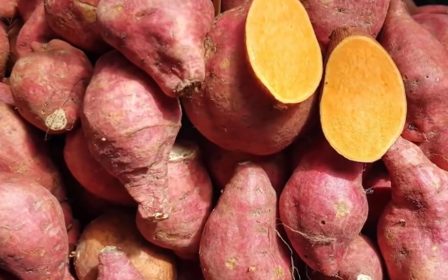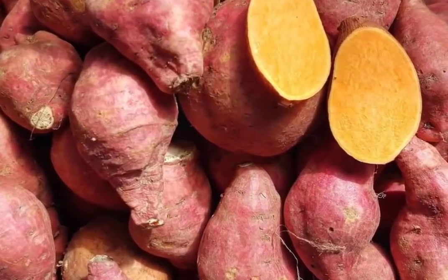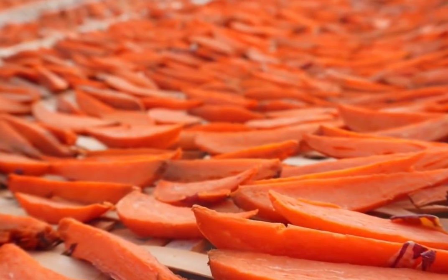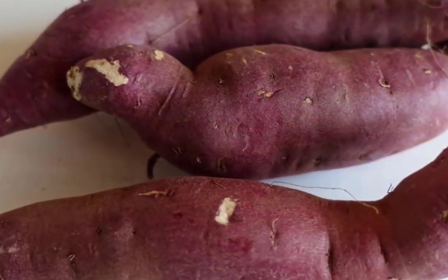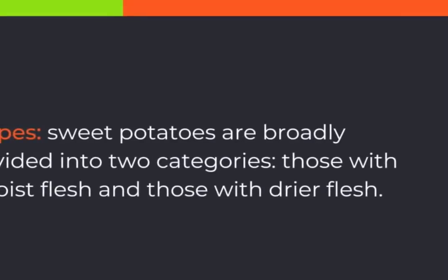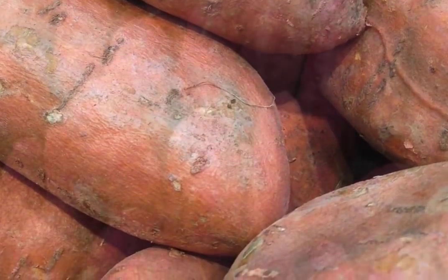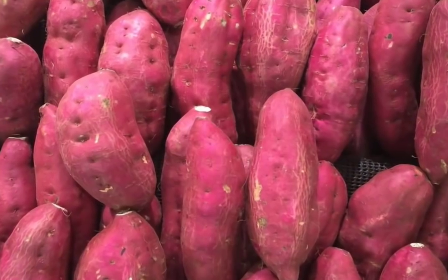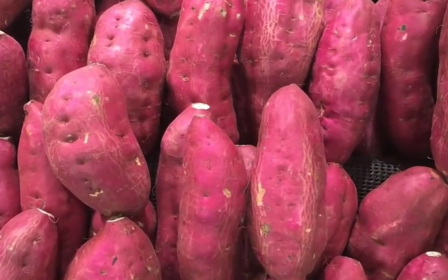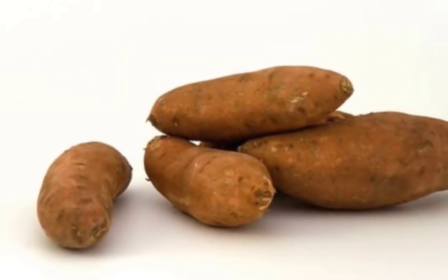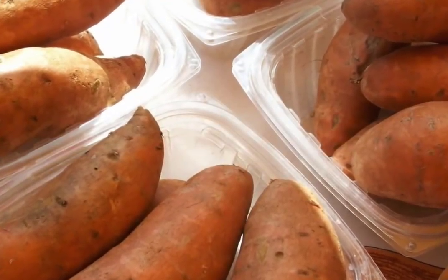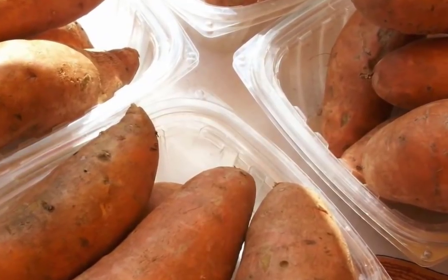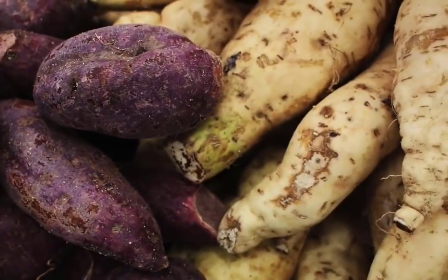Sweet potato contains beta-carotene, which is easily converted by the body into vitamin A. Sweet potatoes are broadly divided into two categories: those with moist flesh and those with dry flesh. Moist flesh varieties are often referred to as yams, which are botanically different.